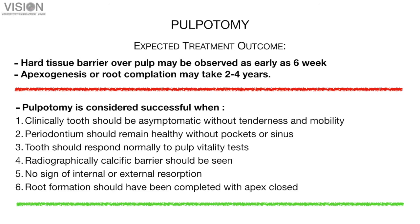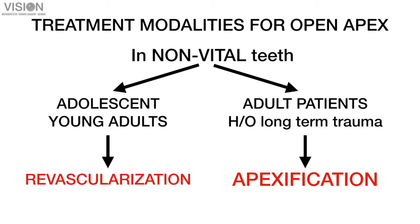A magnified view shows the pre-operative situation at the apex with almost parallel internal root walls, and as time progresses root formation completes with tip closure — exactly the expected result from pulpotomy. In a typical pulpotomy procedure, a hard tissue barrier forms over the pulp, observable as early as six weeks. Apexogenesis or root completion may take up to two to four years. Pulpotomy is considered successful when the tooth is clinically asymptomatic, the periodontium is healthy, the tooth responds normally to pulp vitality tests, a calcific barrier is visible radiographically, there is no internal or external resorption, and root formation has completed at a pace similar to the adjacent tooth.